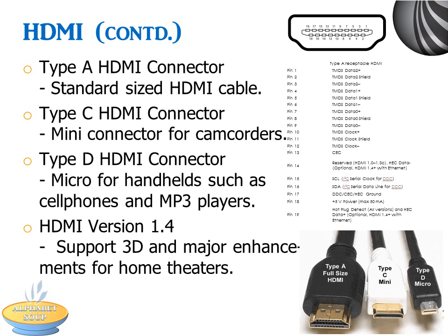As you know from dealing with TVs, digital cameras, and phones, HDMI connectors come in a variety of sizes. This slide shows you the various types. Type A is the standard that's on most televisions. Type C is a mini-HDMI that is usually on video camcorders. And Type D is the micro-type you find on your phone or MP3 player.